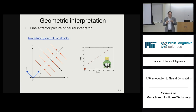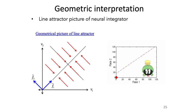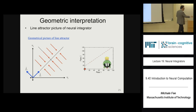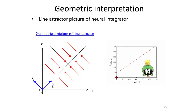We can see this attractor in action by recording simultaneously from two neurons in the integrator network of the goldfish during the task where the animal saccades to different directions. We plot the firing rate of neuron 1 versus the firing rate of neuron 2, and an indicator shows which way the goldfish is looking.